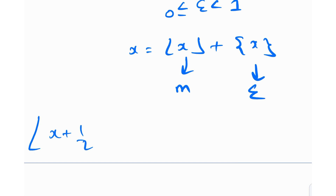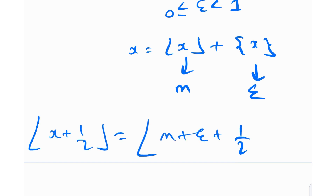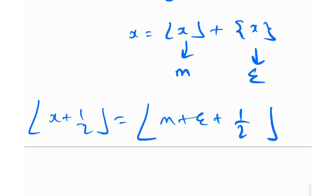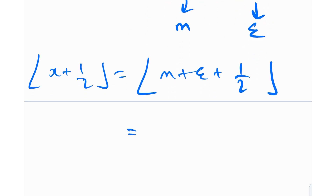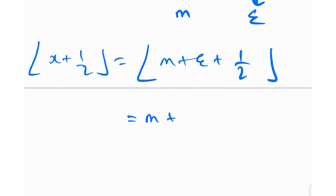So floor(x + 1/2) really becomes floor(m + ε + 1/2), since x = m + ε. Since m is an integer, it comes out of the floor — that's one of the most basic properties of the floor function. So we get m + floor(ε + 1/2).